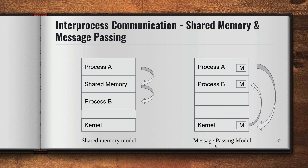In the message passing model, process A generates a message. That message gets passed to the kernel, and then the kernel passes that particular message to process B. So the message from process A goes to the kernel, and the same message goes to process B. That's how inter-process communication takes place between processes in these two models.